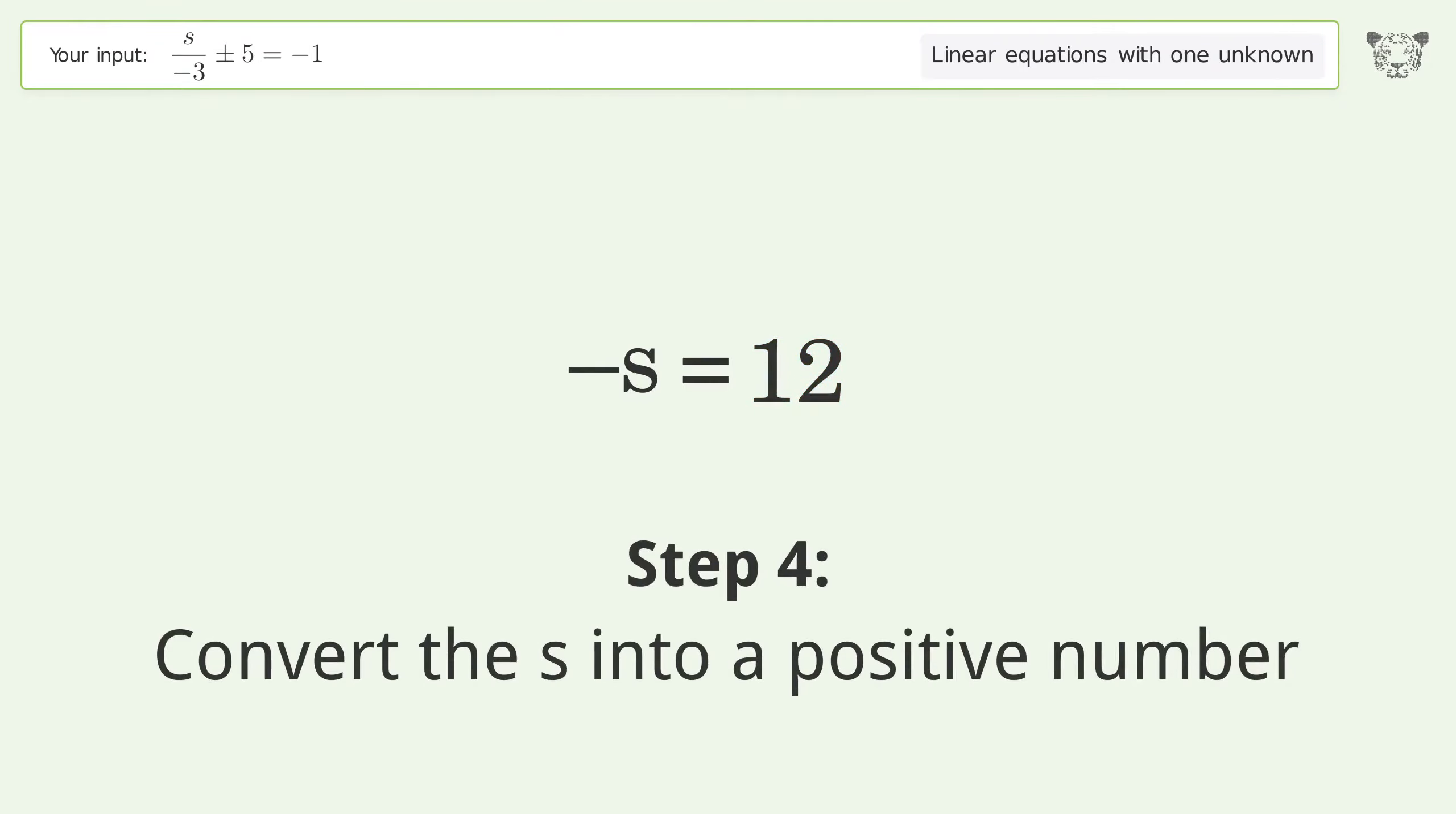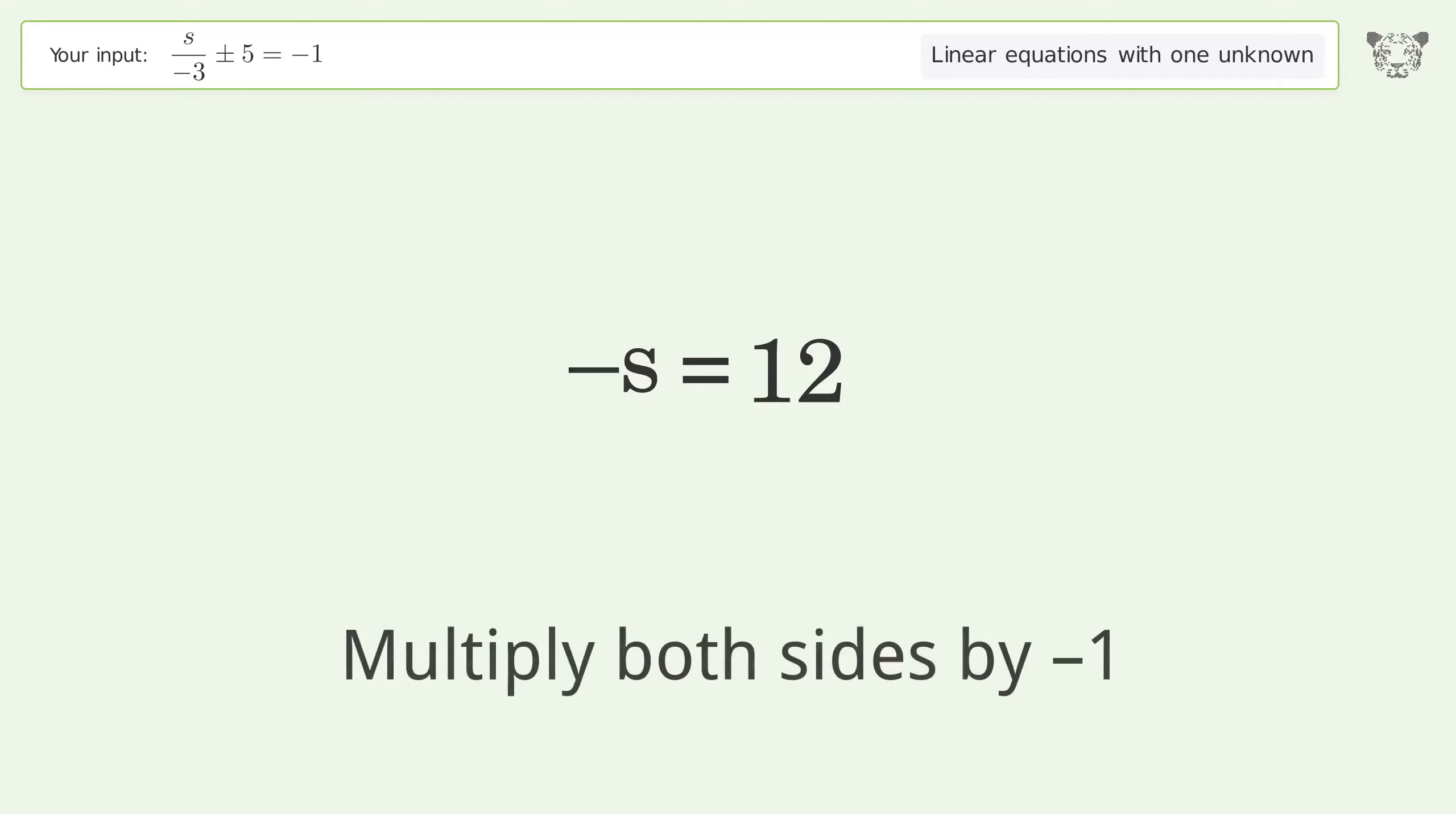Convert the s into a positive number. Multiply both sides by negative 1. Remove the ones. Simplify the arithmetic.